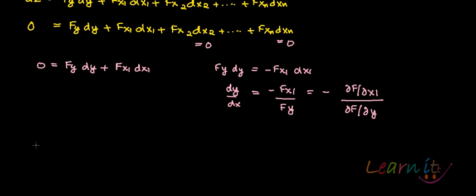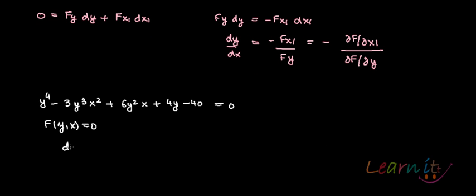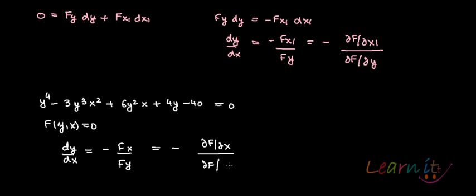Suppose you have the function y⁴ - 3y³x² + 6y²x + 4y - 40 = 0. As you can see, this is a function of the form f(y, x) = 0. You can't explicitly find y in terms of x — you cannot write y as an explicit function of x. So you'll have to use the implicit function approach, and from the derivation above, dy/dx = -(∂f/∂x)/(∂f/∂y).